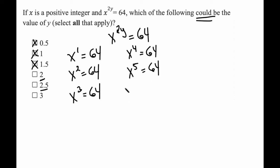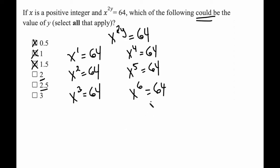However, when I plug in 3 for y, I get x to the power of 2 times 3, or x to the power of 6. 2 times itself 6 times — 2 times 2 times 2 times 2 times 2 times 2 — is equal to 64, so that one also works.